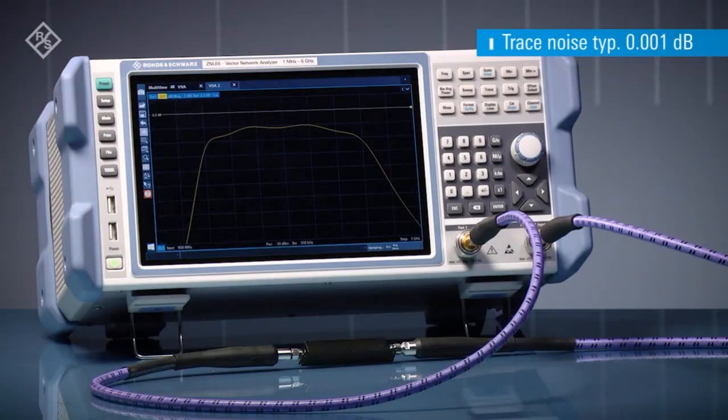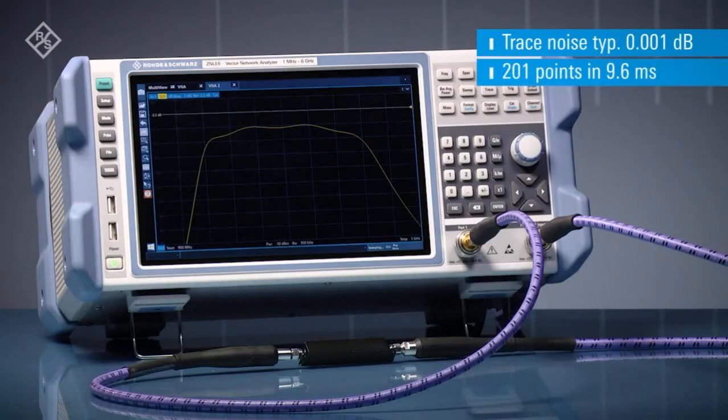Do you need to measure fast? The ZNLE is up to 10 times faster than similar instruments. Measure 201 points fully calibrated in only 9.6 milliseconds.